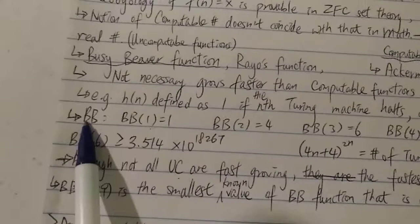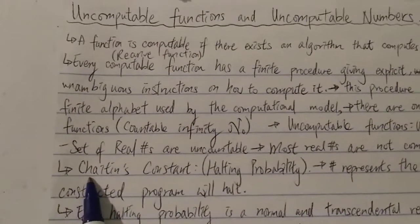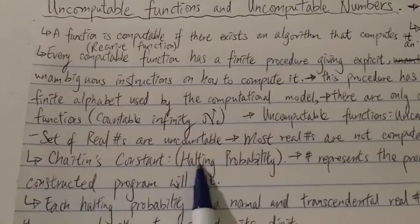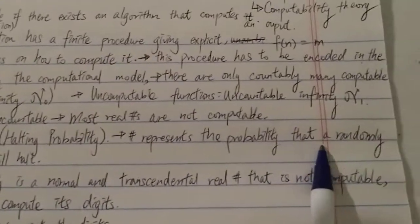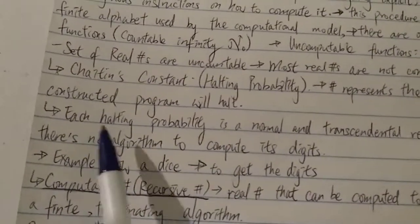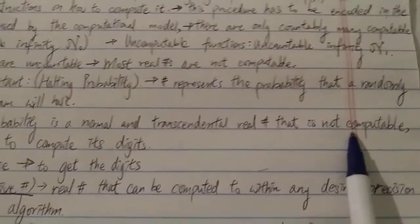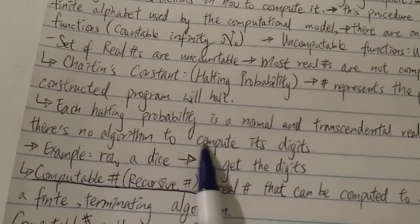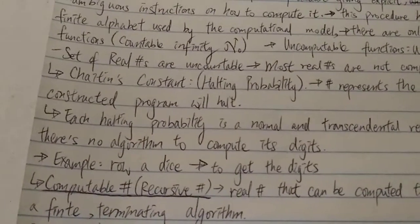Some examples of uncomputable functions are of course the Busy Beaver function and the Rayo's function. One example of an uncomputable number would be Chaitin's constant, also known as the halting probability. Basically, this number represents the probability that a randomly constructed program will halt. Obviously, this is undecidable. Each halting probability is a normal and transcendental real number that is not computable, which means there's no algorithm to compute these digits.